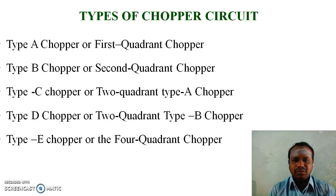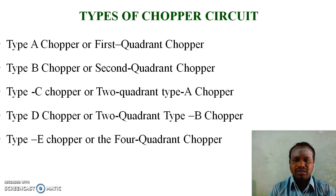Types of chopper circuit: Type A chopper or first quadrant chopper; Type B chopper or second quadrant chopper; Type C chopper or two-quadrant type A chopper; Type D chopper or two-quadrant type B chopper; Type E chopper or four-quadrant chopper.